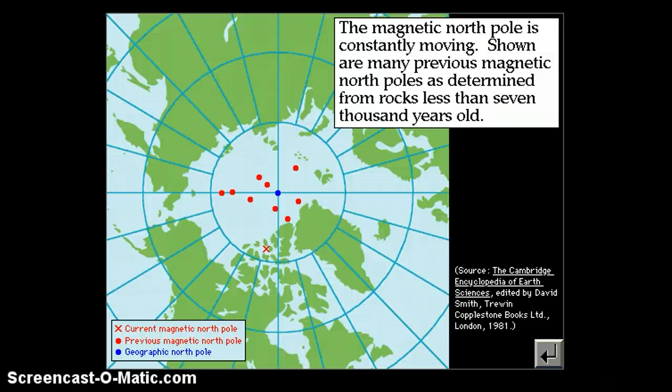The red dots show previous locations of the magnetic north pole. The current magnetic north pole is right here. The spin pole, the geographic north pole, is right here in blue.